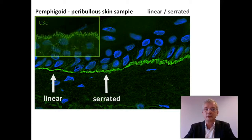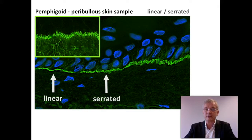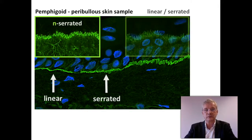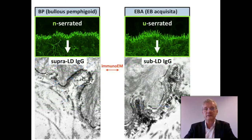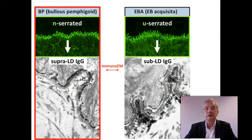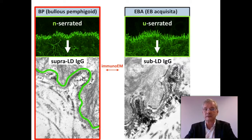There are two different serrated deposition patterns: the n-serrated and the u-serrated. The n-serrated pattern in bullous pemphigoid has a deposition above the lamina densa, where you can see a rounded top in this pattern that looks like an n.